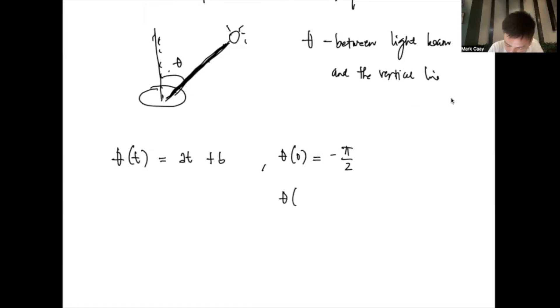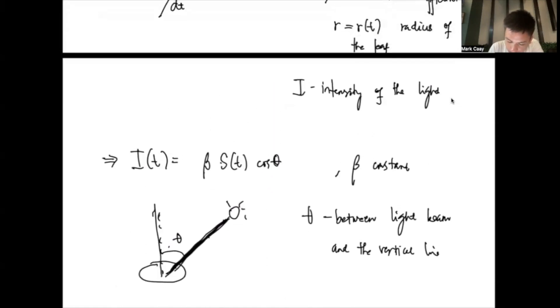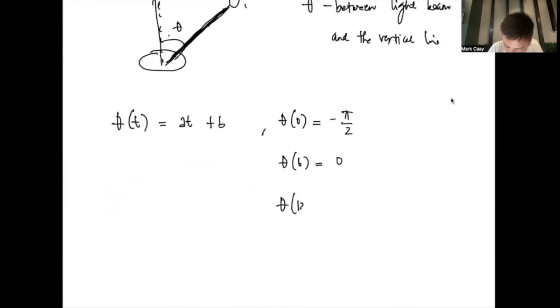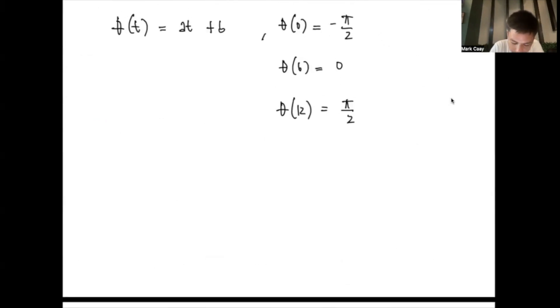And then, theta of 12 is at its highest position, so that's pi over 2. So, what does this mean? So, a here is pi over 12, and b here is negative pi over 2. So, theta(t) is equal to pi(t minus 6) over 12. So, substituting, we have theta(t) equals this.